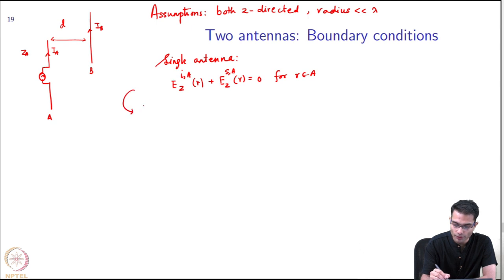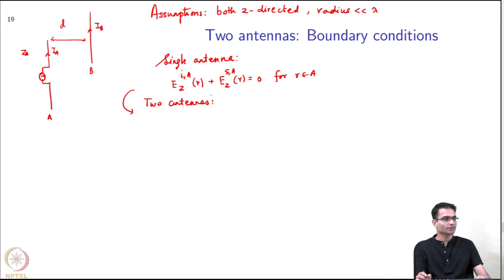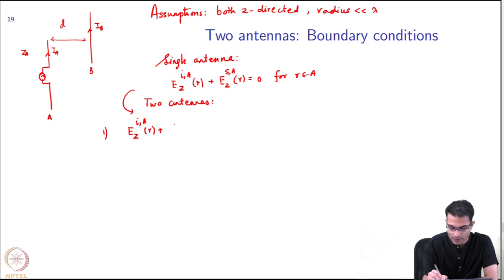With a single antenna, we will keep comparing with the single antenna case and build the theory of two antennas. With the single antenna, our boundary condition was E_z^(i,A)(R) + E_z^(s,A)(R) = 0 for R belonging to A. And now we are going to, for two antennas, find out the boundary conditions.